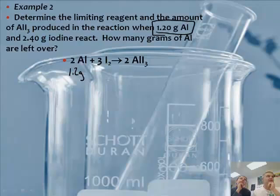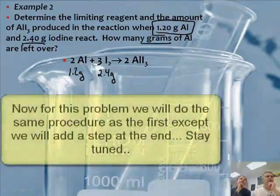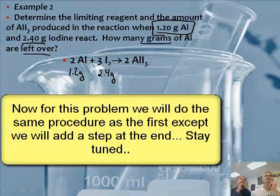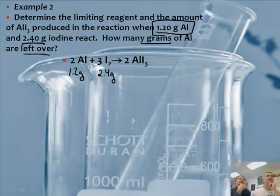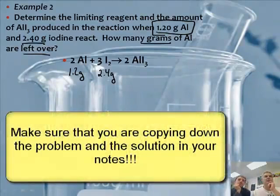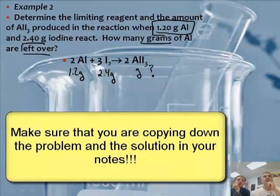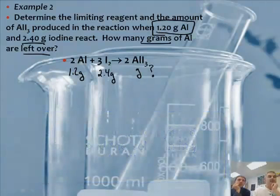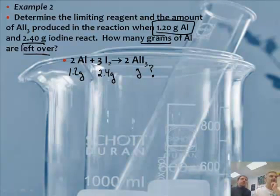So we have 1.2 grams of Al and 2.4 grams of iodine. The problem also asks how many grams of aluminum are left over, and to determine the limiting reagent and the amount of AlI₃ produced. So we have three parts to answer. Let's do the first part first.